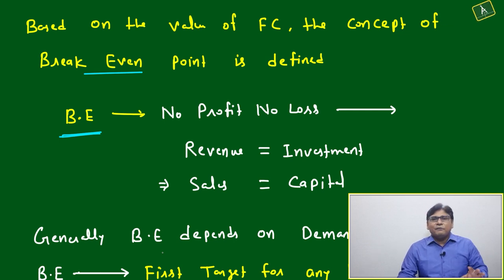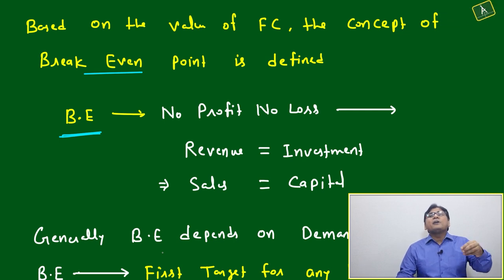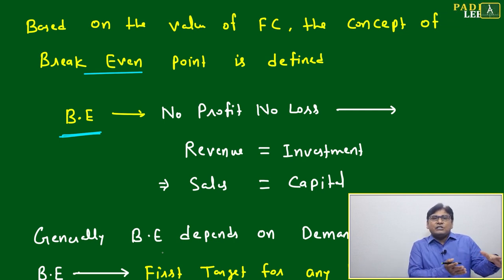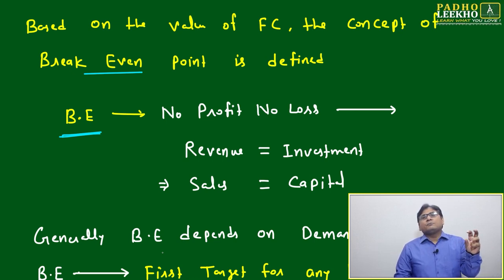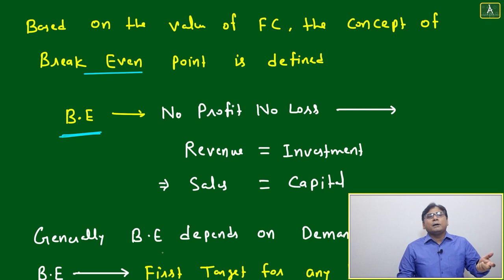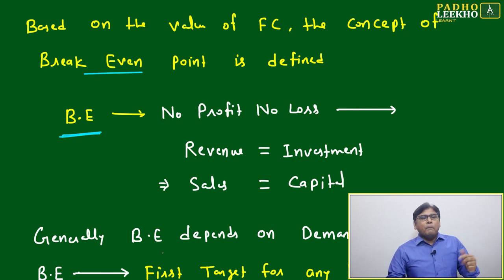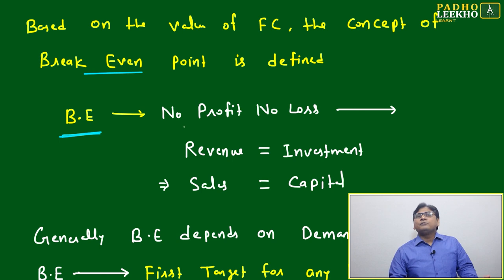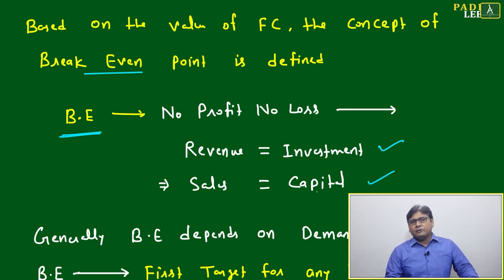Break-even can be calculated using various terminologies — either in terms of number of units produced or in terms of revenue amount. For example, if 10 crores revenue has come, that defines your break-even. Both in terms of amount and in terms of units, we can calculate the break-even point. Break-even point is when there is no profit, no loss — revenue equals investment, sales equals capital.